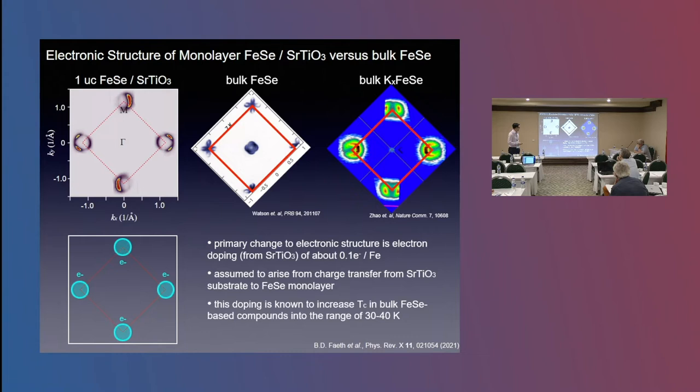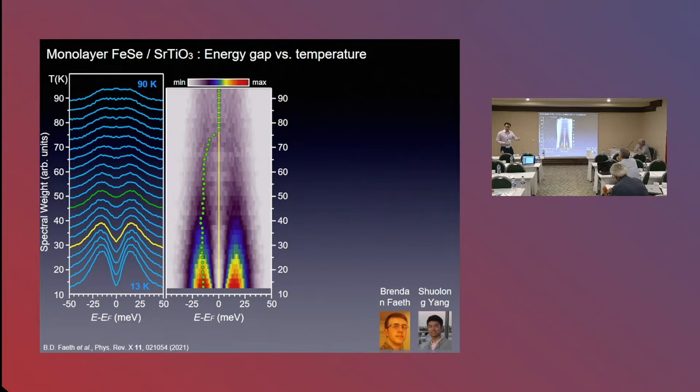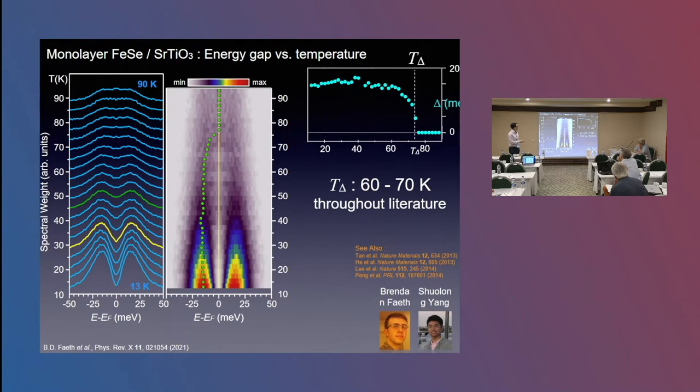So what do we see spectroscopically? If I now look at the nominal Fermi wave vector, then we basically warm up from the superconducting state all the way up to 90 Kelvin. This is the ARPES data, and then we've symmetrized it to remove some Fermi broadening effects. You basically see that the gap fills in and closes around 60 to 70 Kelvin. We see this gap of about 15 MeV close around 60 to 70 Kelvin, which is really consistent with a lot of what other people have reported in the literature.